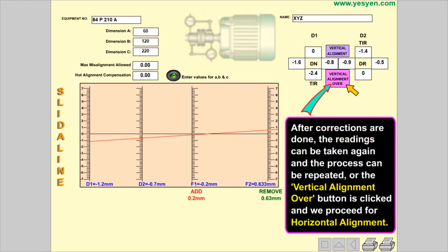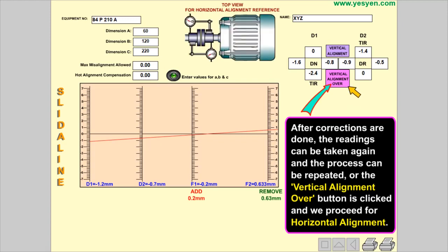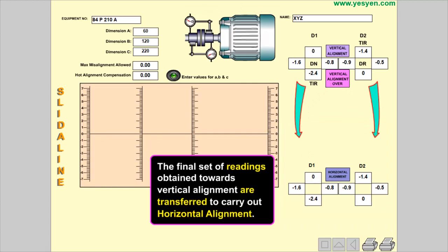After corrections are done, the readings can be taken again and the process can be repeated, or the Vertical alignment over button is clicked and we proceed for horizontal alignment. The final set of readings obtained towards vertical alignment are transferred to carry out horizontal alignment.